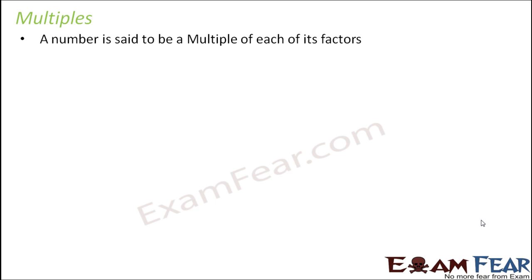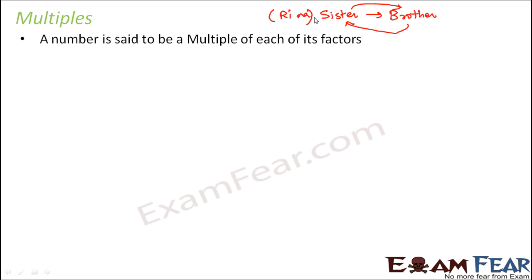Factors and multiples are very closely related. It's something like this: let's say you have a sister. You will be your sister's brother and she will be your brother's sister. Let's say your sister's name is Rina and your name is Sunny — so Rina is the sister of Sunny and Sunny is the brother of Rina. That's the relation.